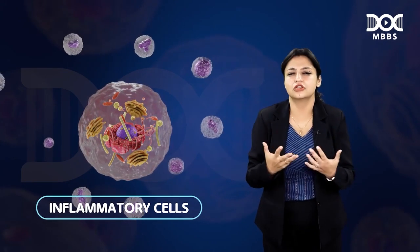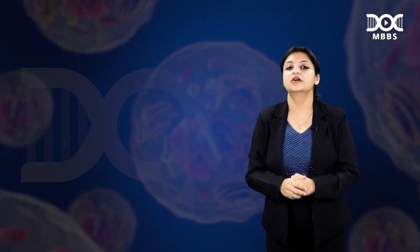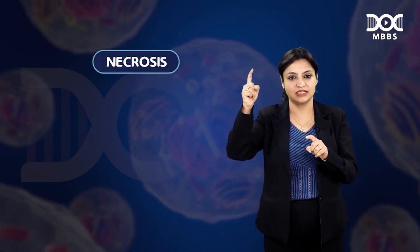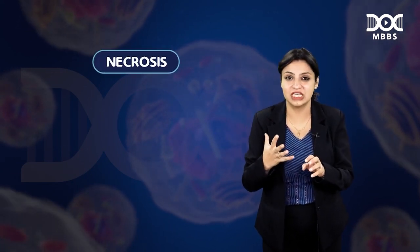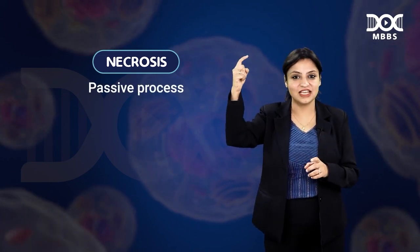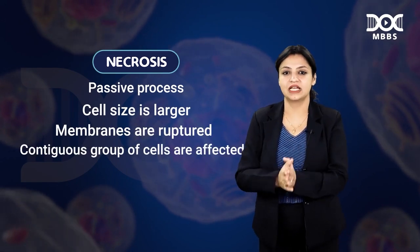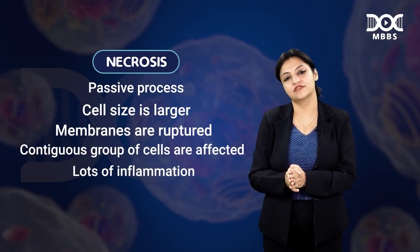What about the thousand people who came? They will just be standing and making a video for YouTube or social media — those are the inflammatory cells. So there is lots and lots of inflammation in necrosis. To summarize necrosis: it is a passive process, cell size is larger because when somebody hits you, you scream and swell up. The membranes are always damaged, contiguous group of cells are affected, and there is lots of inflammation.